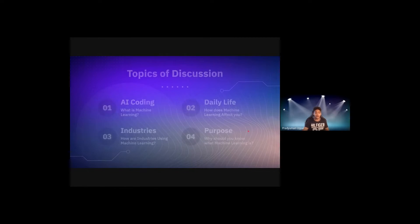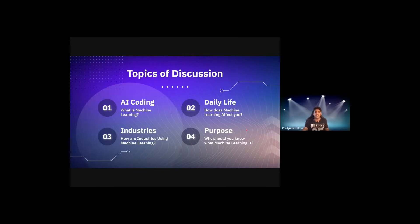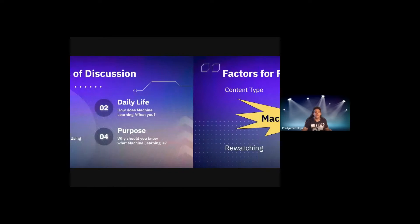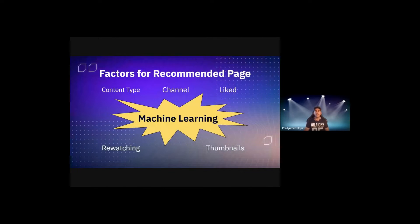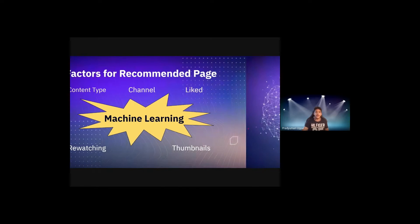The main points I'll be covering today are: what is machine learning, how does machine learning affect you, how are industries using machine learning, and why should you know what machine learning is. Realistically, there are a lot of factors that play a role in getting your video onto a recommended page, so if you are an aspiring influencer, don't think this is a one-way ticket to fame. But the most prominent factor among all six is machine learning.